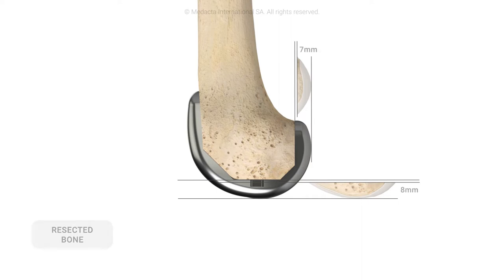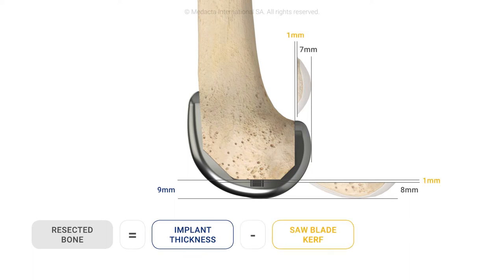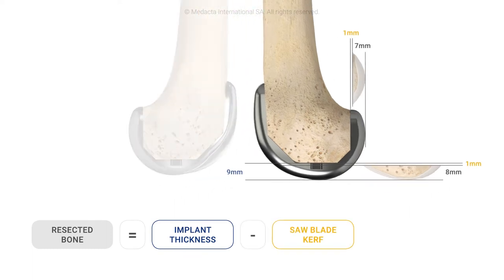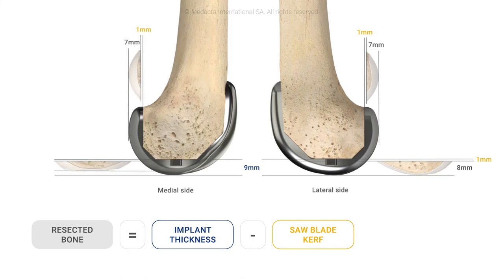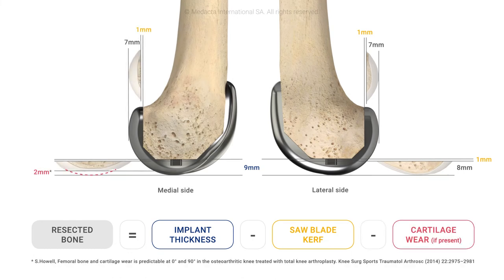Every step can be verified by measuring the resected bone. On the unworn side this equals the implant thickness minus one millimeter of saw blade kerf. On the worn side, another two millimeters of missing cartilage should be considered and subtracted.